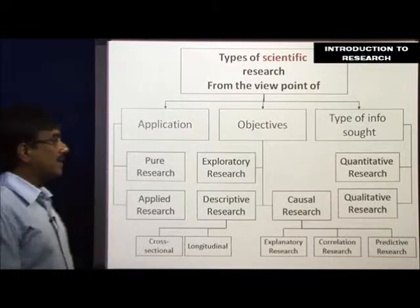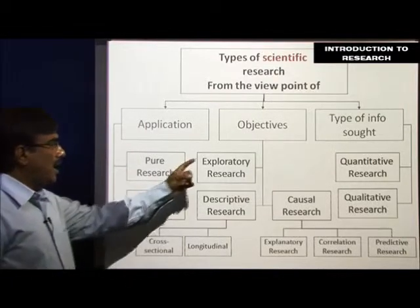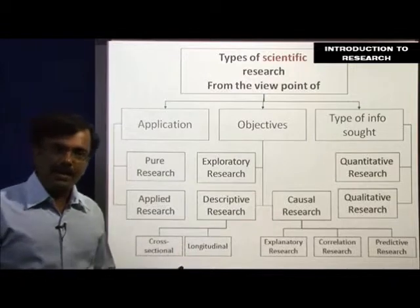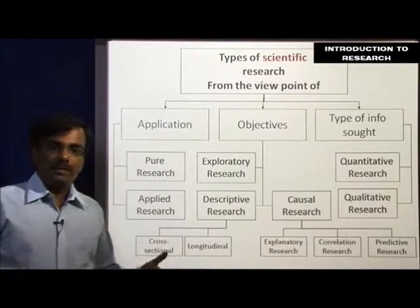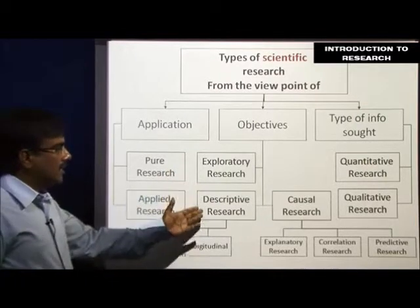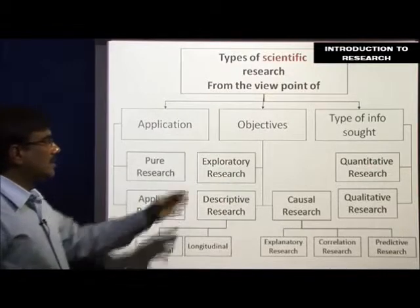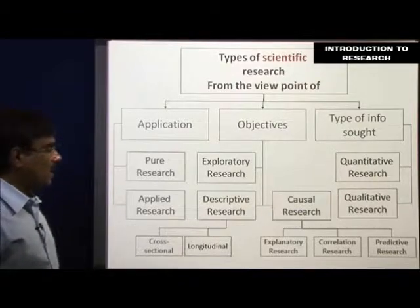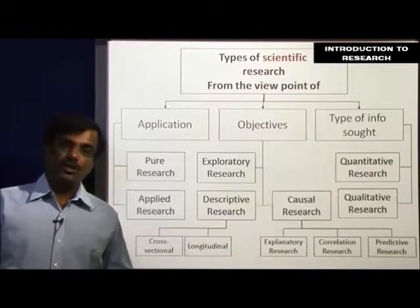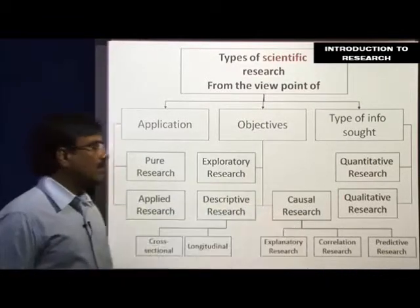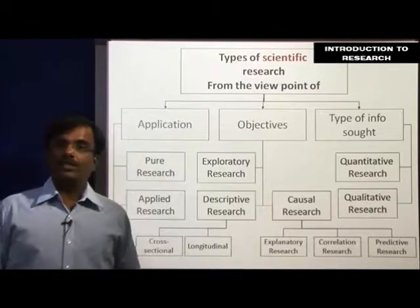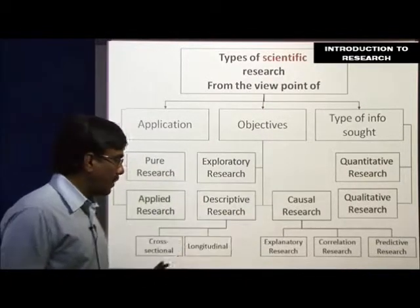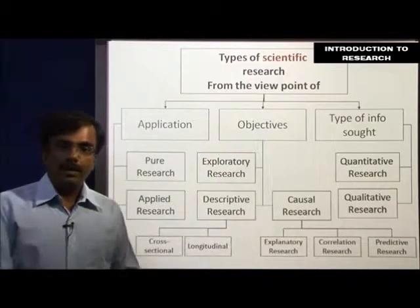If you look at scientific research from the point of view of objectives, there are three fundamental types: exploratory research, descriptive research, and causal research. We will explain these three terms in more detail later on, but for now we need to understand that research objectives can be exploratory, descriptive, or causal. Descriptive research is again of two types — cross-sectional and longitudinal — and causal research is of three types: explanatory, correlation research, and predictive research. I will explain all these types in detail in due course.